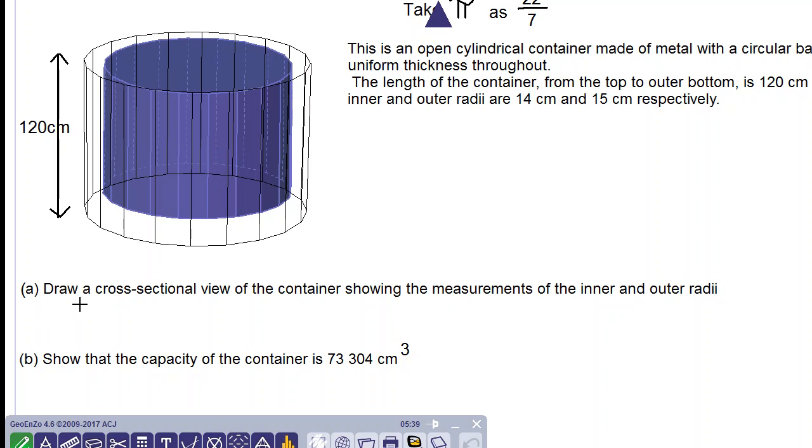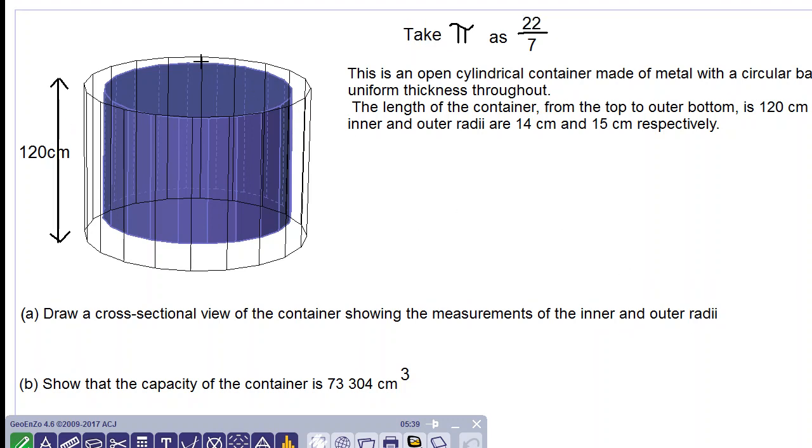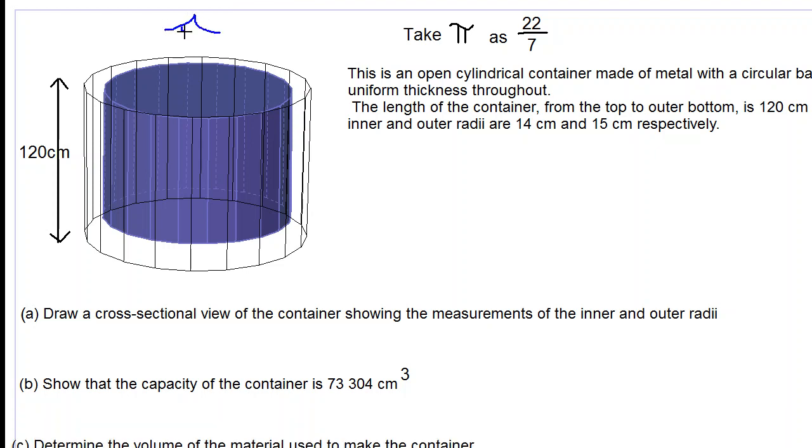Part A says draw a cross-sectional view of the container showing the measurements of the inner and outer radii. When we draw a cross-sectional view of the container, we pretend as if we are cutting across, slicing the container across and then looking downwards. I draw an eyeball here. We are looking down at the container to see what it looks like and we are drawing what we see.